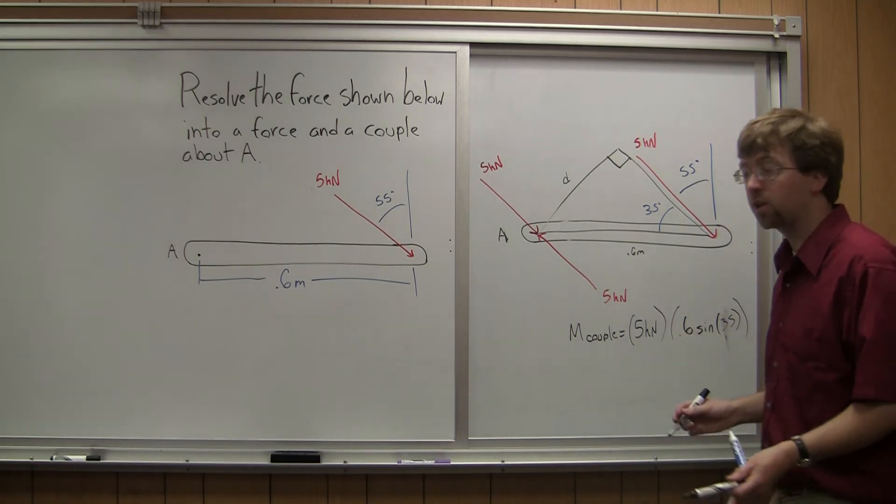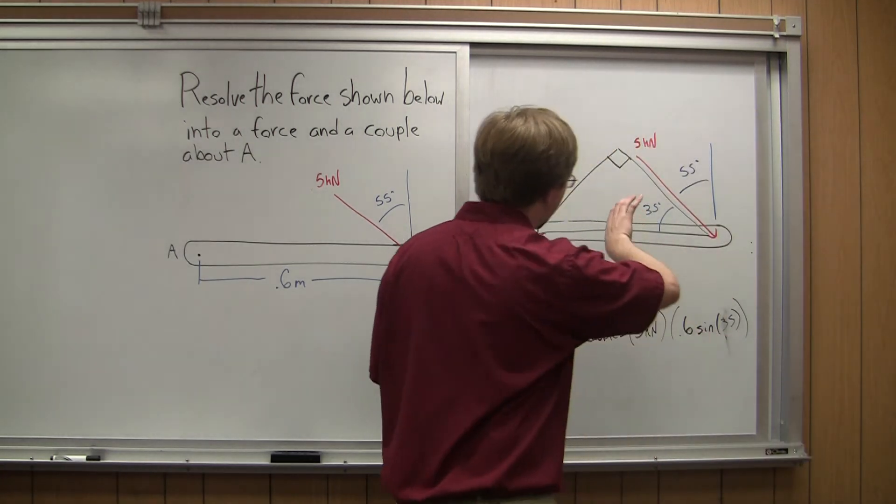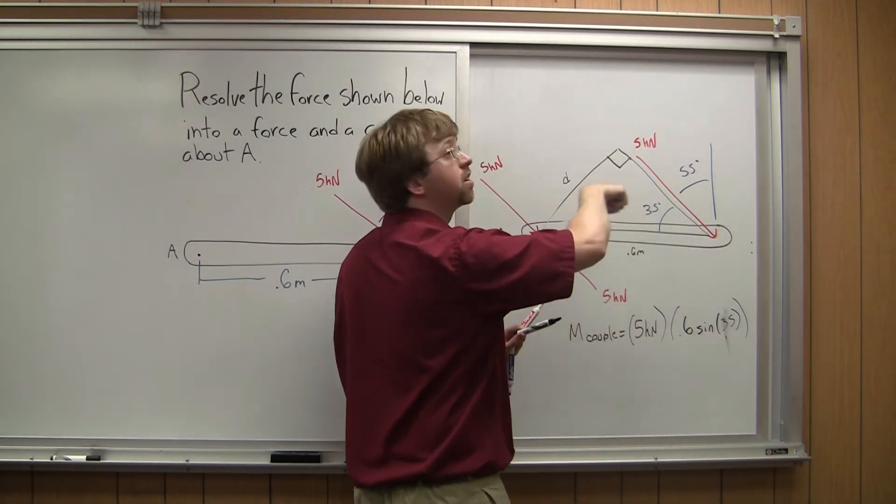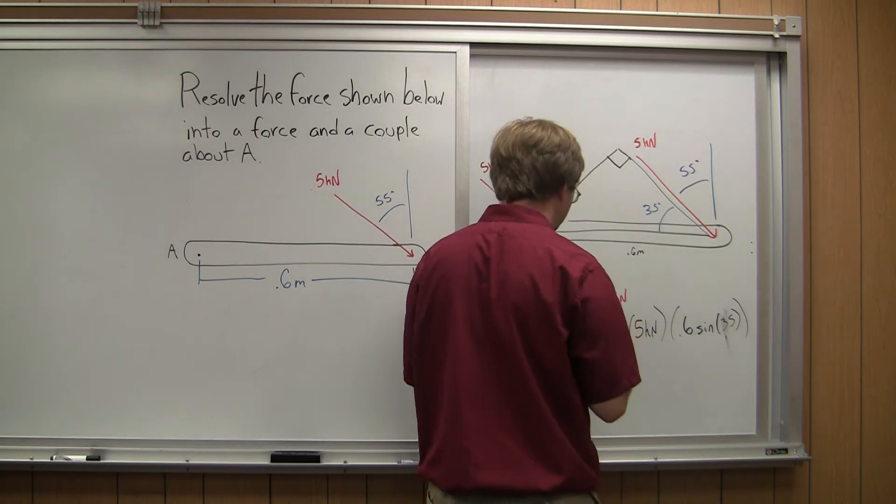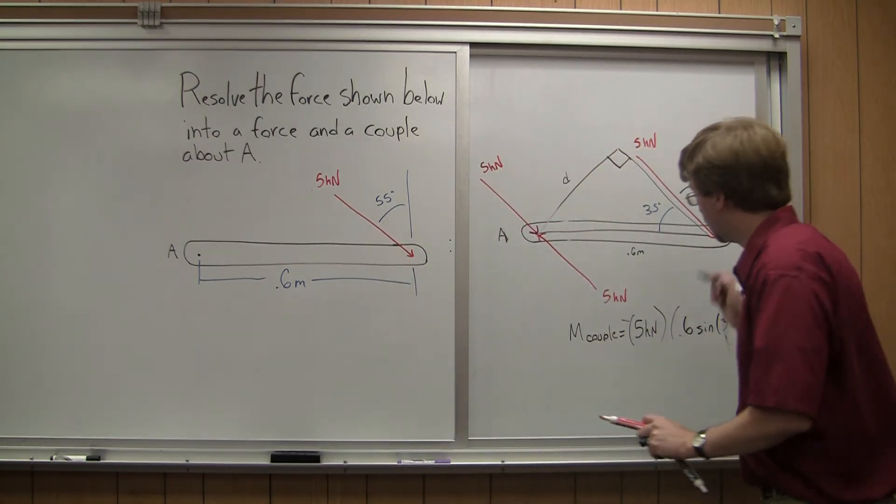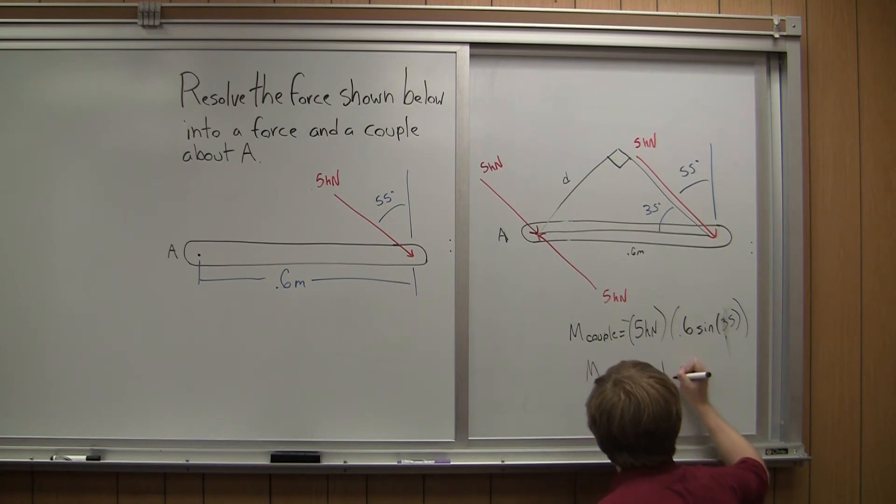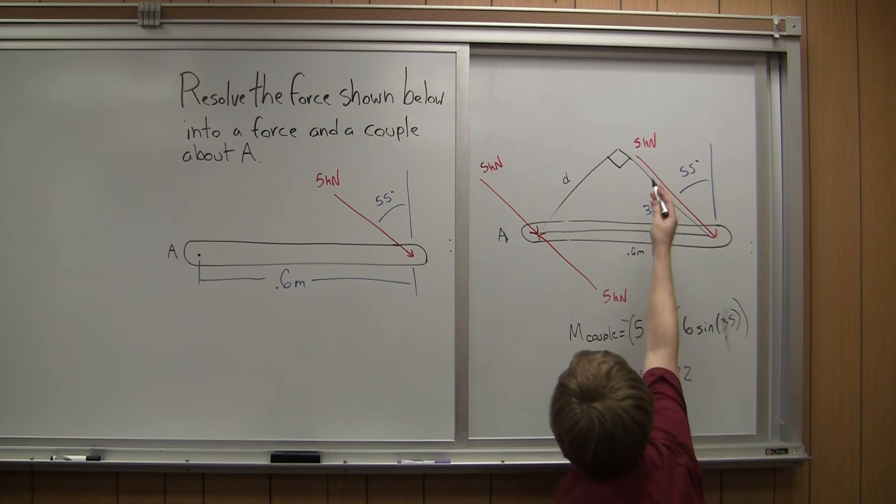And so for the moment of this whole couple, we can also think about the direction. It will tend to rotate this way, so it's going to be a negative moment. So this whole thing is also going to be negative. So if I solve this all out, the moment of my couple should be equal to about negative 1.72, and my units are going to be kilonewton meters.